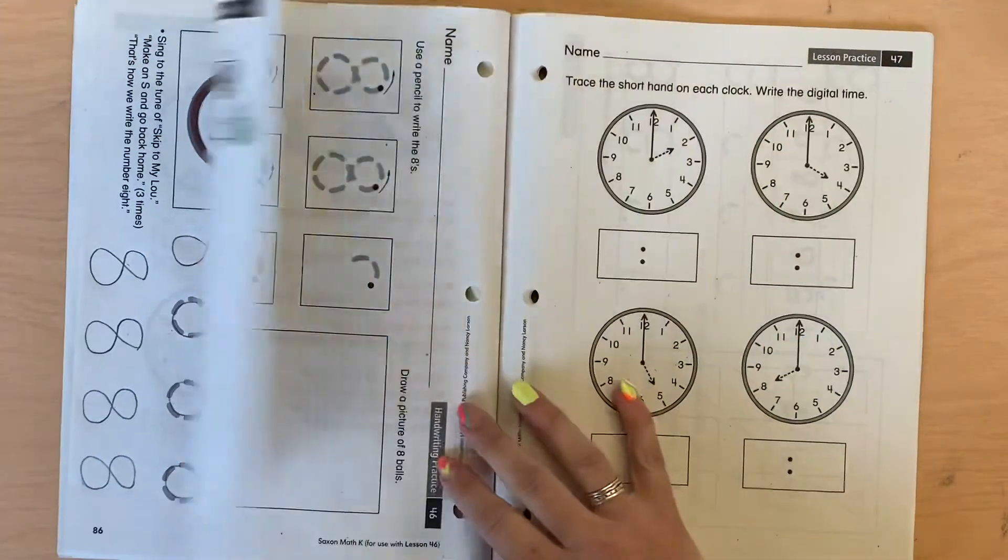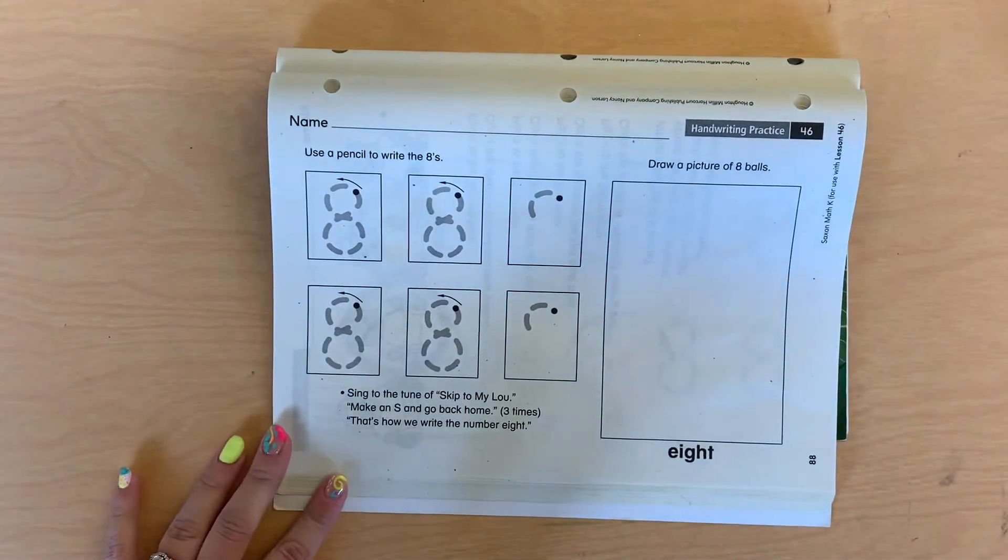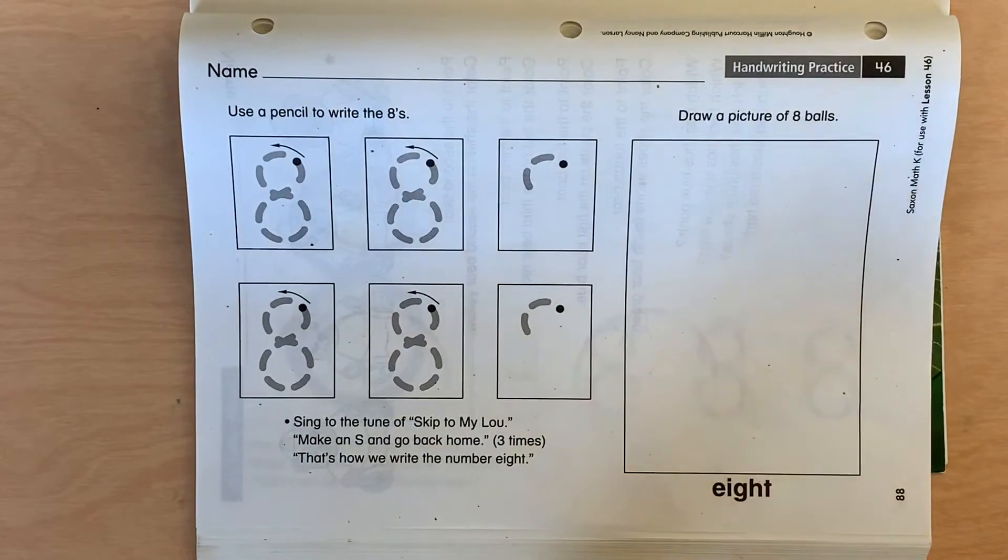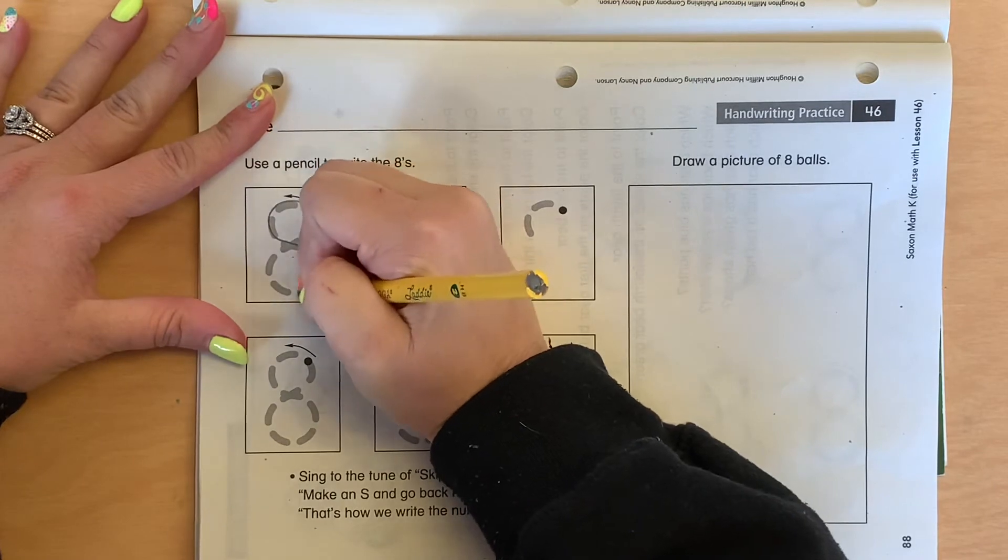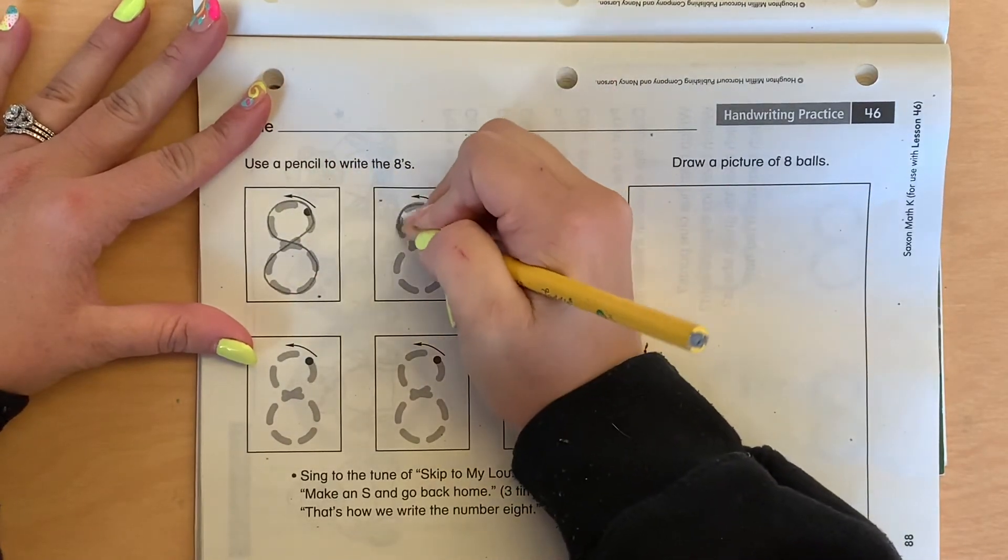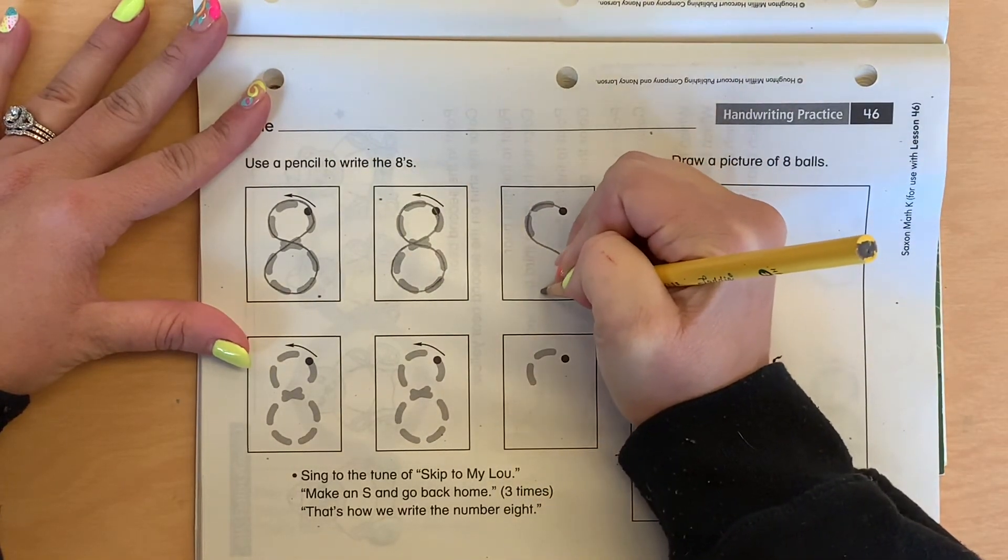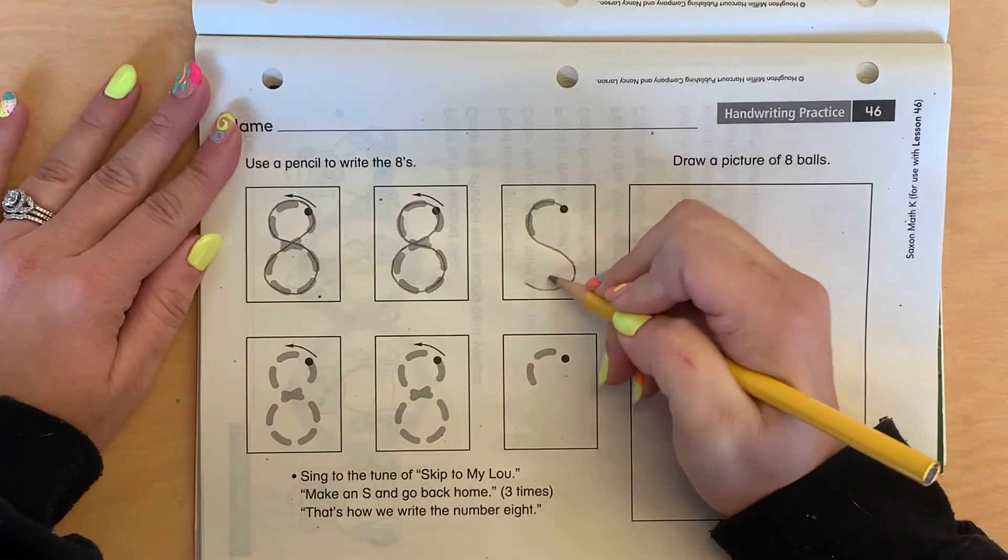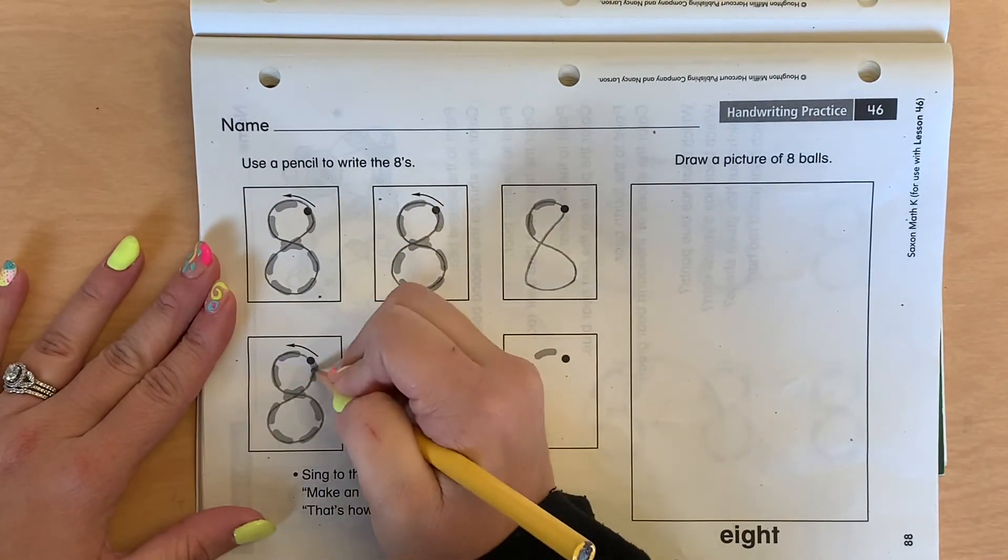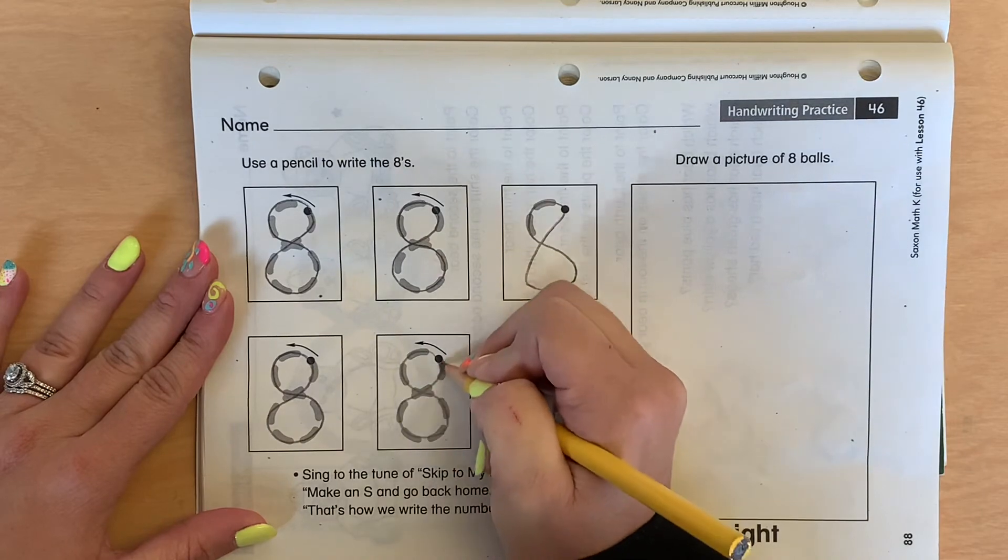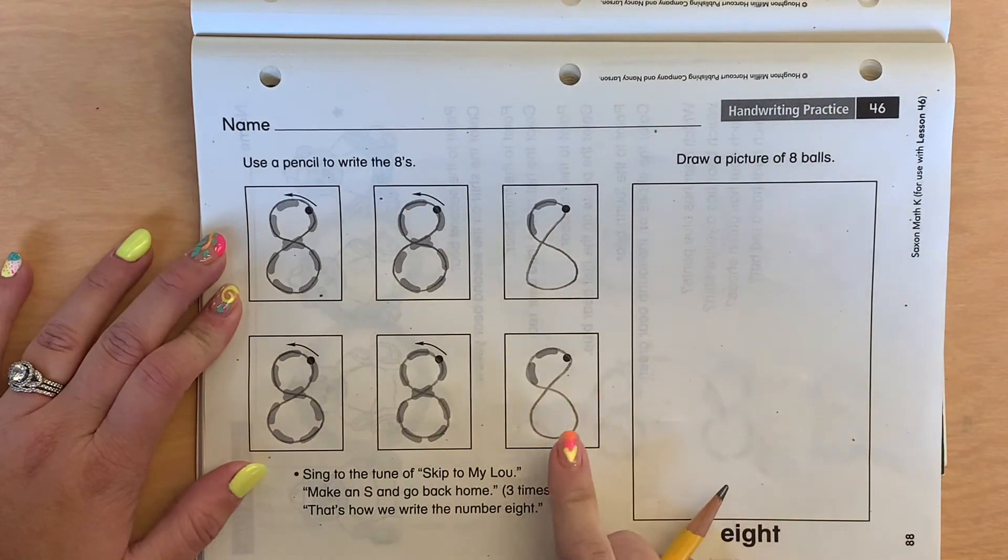All right. Turn your page. We're going to practice that number eight again. Do you remember how to make an eight? We make an s and then we go back home. Make an s and go back home. That's how we write the number eight. So see what I did? I made my s and then I'm going to just connect it back. Make an s and go back home. That's how we write the number eight.